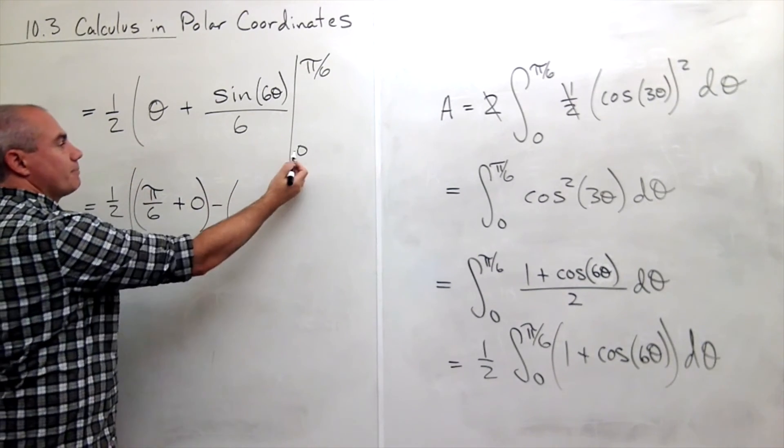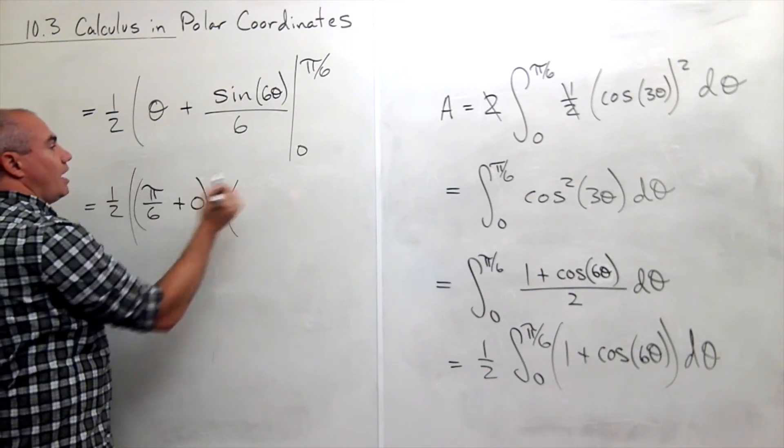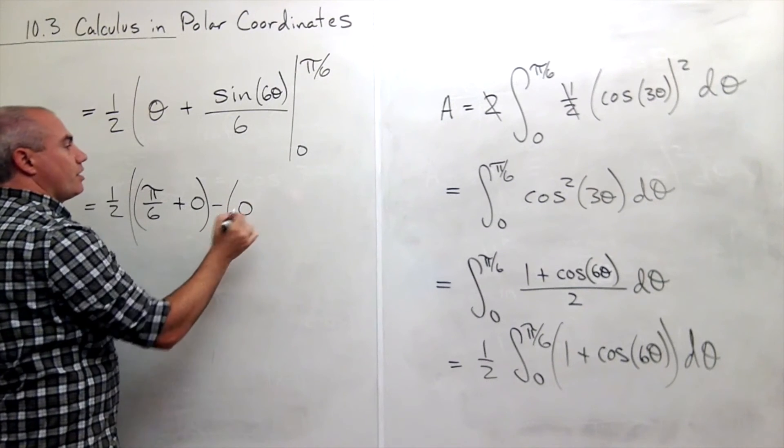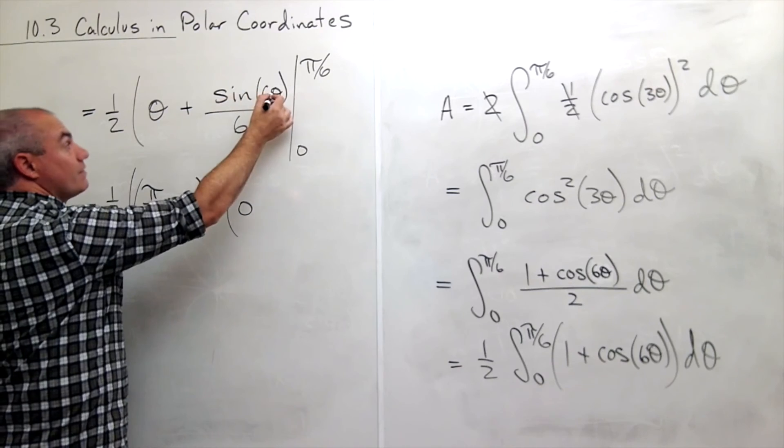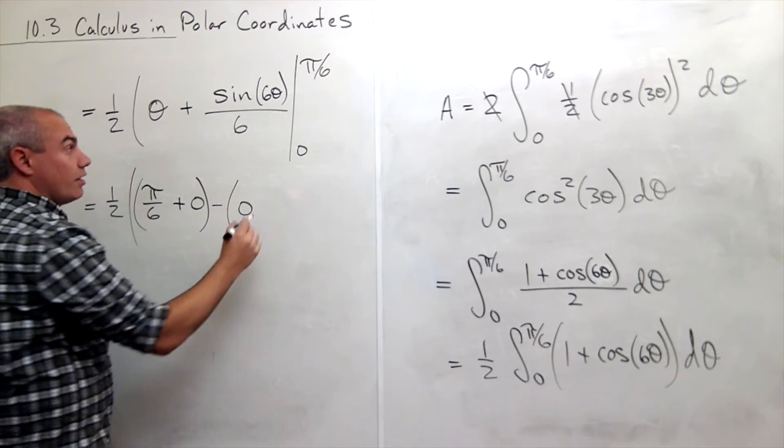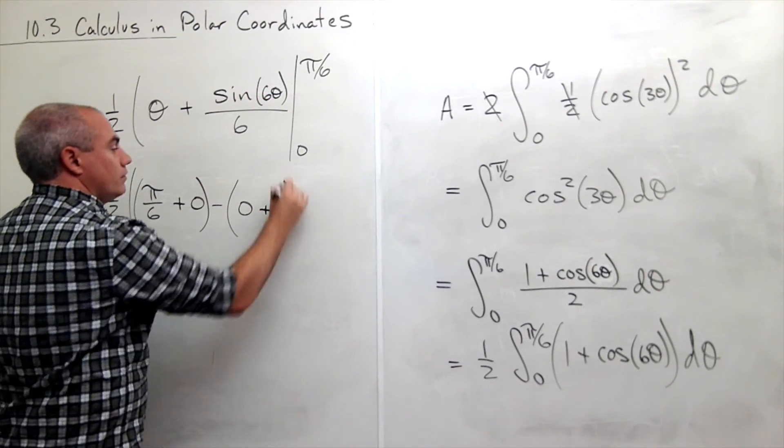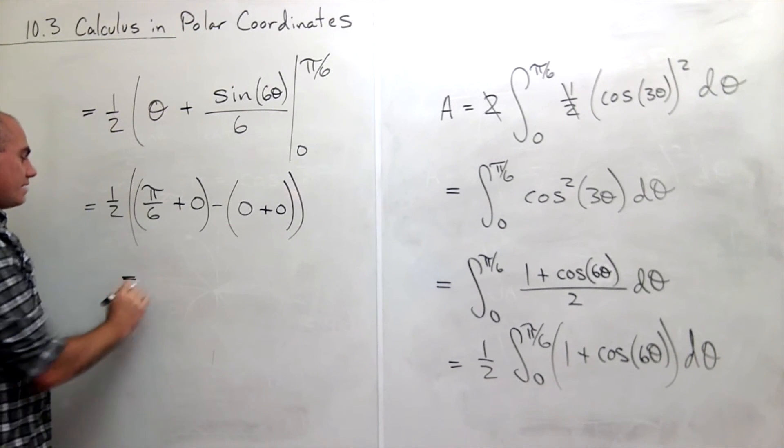Then I subtract plugging in zero. If I plug in zero for theta I get zero. If I plug in zero for theta I get sine of six times zero or sine of zero. And sine of zero is zero.